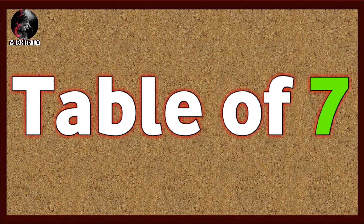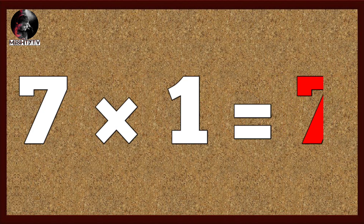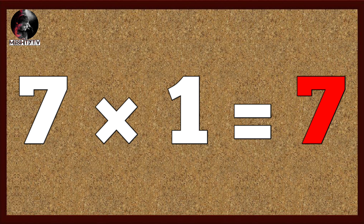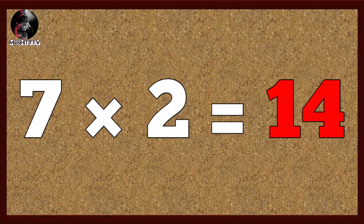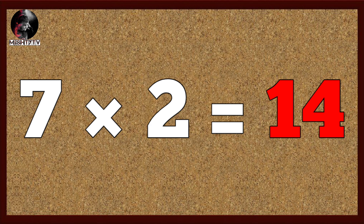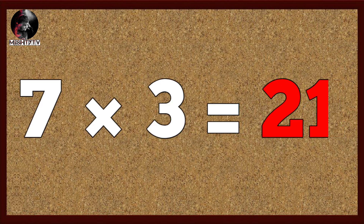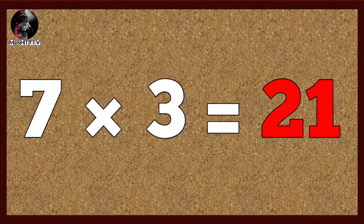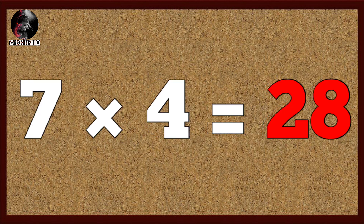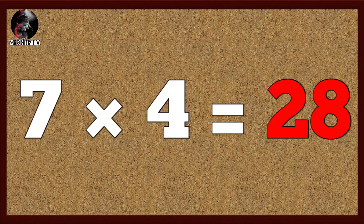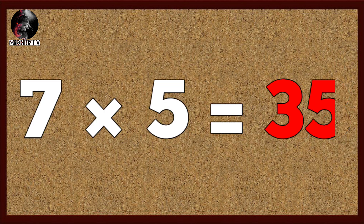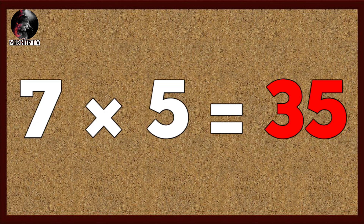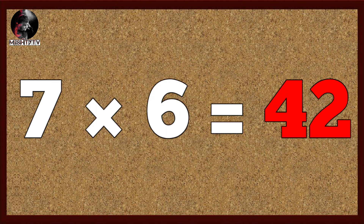Table of seven. Seven one's are seven, seven two's are fourteen, seven three's are twenty-one, seven four's are twenty-eight, seven five's are thirty-five, seven six's are forty-two.